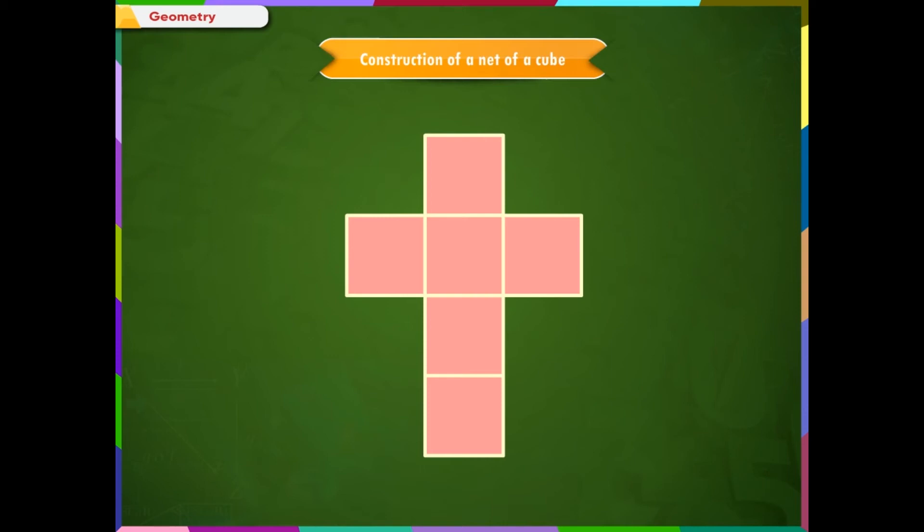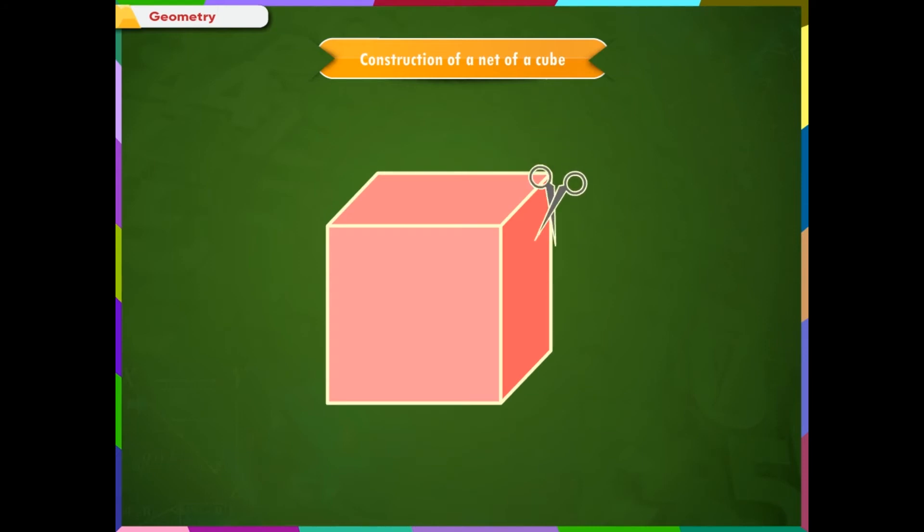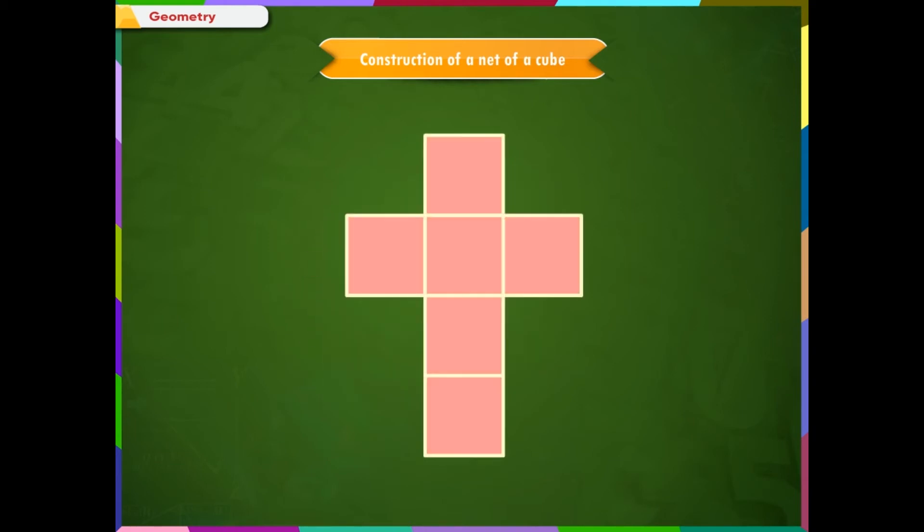Construction of a Net of a Cube. You can do this activity first before proceeding to the next part of the lesson. Take a cheese cube box and cut it out along the edges to make the net for a cube. A cube is a three-dimensional figure with six equal square faces. Observe the figure given on the screen.